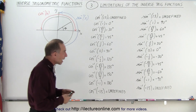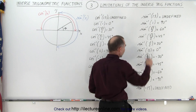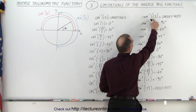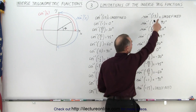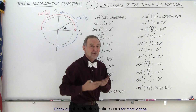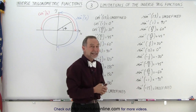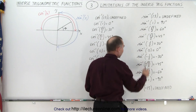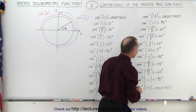Here we have the inverse sine function of a number of numbers. Notice when the number gets to be bigger than 1 or smaller than negative 1, the result will be undefined. There is no such thing as the inverse sine of a number bigger than 1 or smaller than negative 1. But anything from 1 to negative 1, we do have associated angles for that.